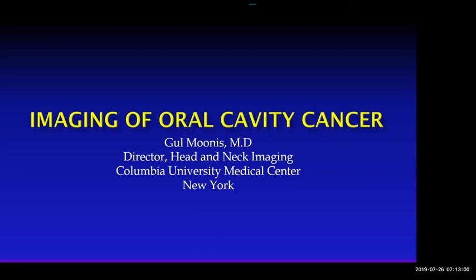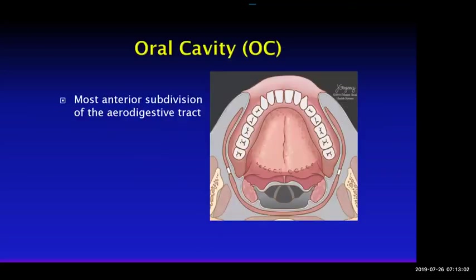The way I'm going to approach it is we're going to first start talking about the anatomy. I'm going to spend a lot of time on anatomy because it can be a little bit confusing. We need to learn the different subsites of the anatomy, then learn a little bit about the staging of the cancer, and then eventually show some cases.